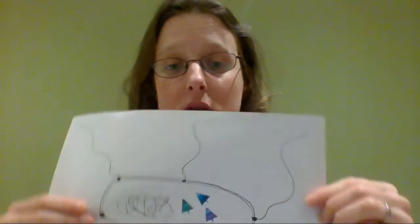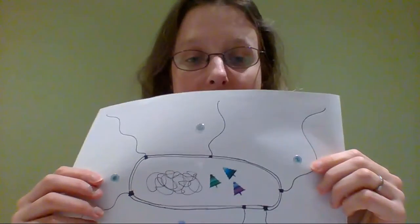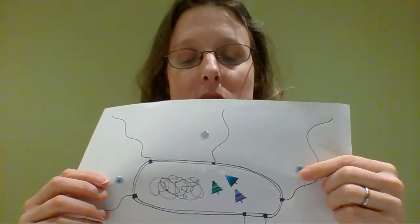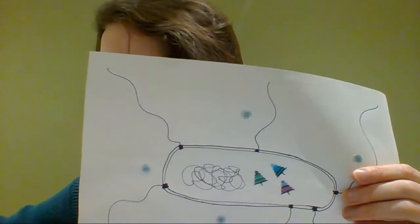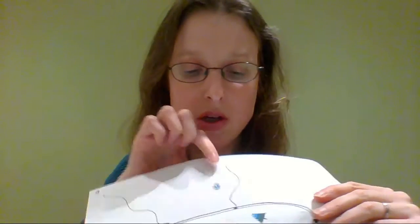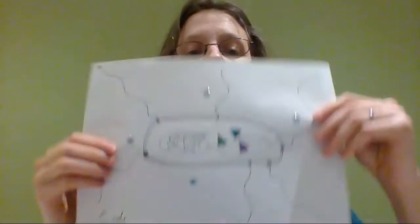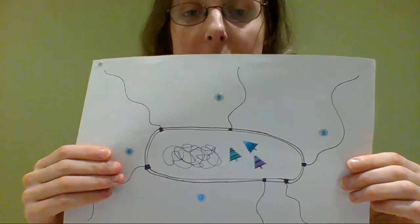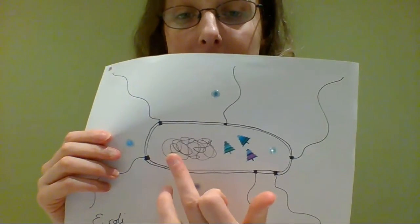So then what happens is our friendly E. coli with its flagella on carries on swimming around. Lucky for it, it finds some lactose. So these are bigger Christmas baubles than the glucose ones, because the glucose obviously is just a little monomer, whereas the lactoses, they are dimers, so they're a bit bigger. So now E. coli has found itself some lactose, so some of that is just going to get inside the cell.